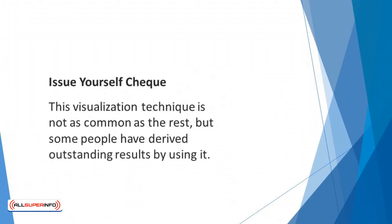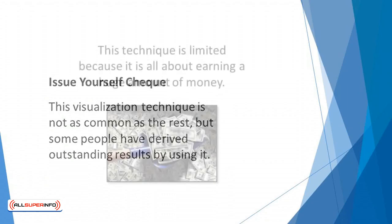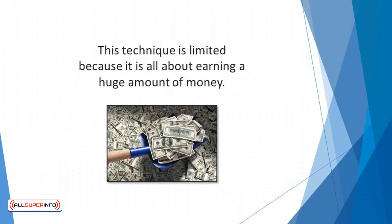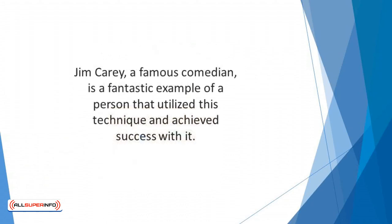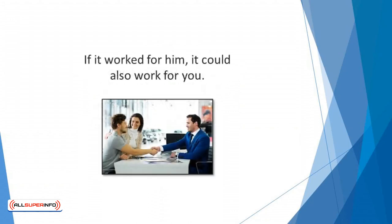Issue yourself a check. This visualization technique is not as common as the rest, but some people have derived outstanding results by using it. It involves writing yourself a check. This technique is limited because it's all about earning a huge amount of money. It is worth a try if you have a plan to become a millionaire at a certain age in life. Jim Carrey, a famous comedian, is a fantastic example of a person that utilized this technique and achieved success with it. He wrote himself a check of ten million dollars ten years before he eventually became a millionaire. If it worked for him, it could also work for you.